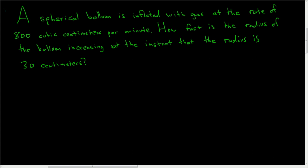A spherical balloon is inflated with gas at the rate of 800 cubic centimeters per minute. How fast is the radius of the balloon increasing at the instant that the radius is 30 centimeters?